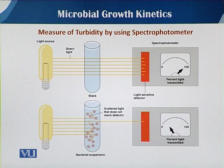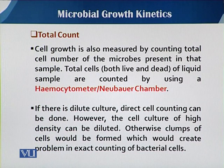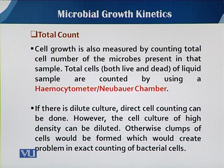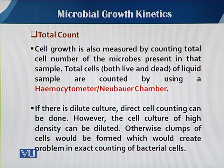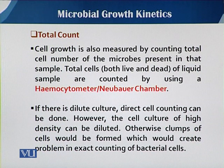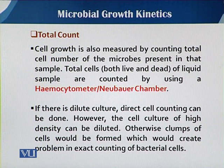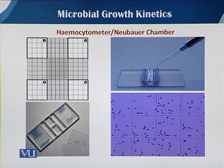We need an alternative method for microbial growth estimation. The second method is the total count. Total count is a cell growth measurement in which we count all cells, including both viable cells and dead cells. The total count is mostly done with the help of a slide called a hemacytometer. If the culture is very diluted, we can directly use that culture, but when the culture is very turbid, we must first dilute the sample.